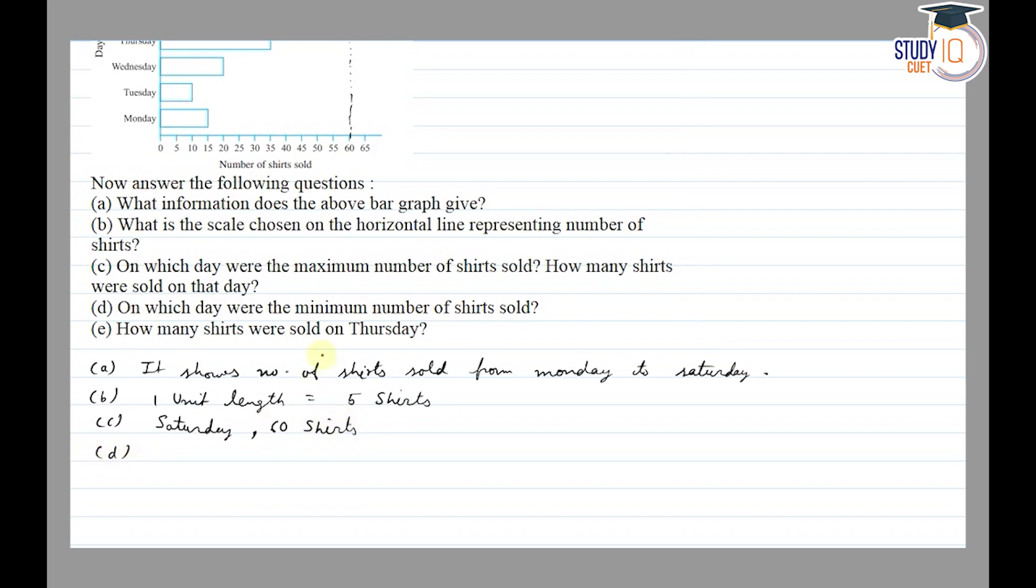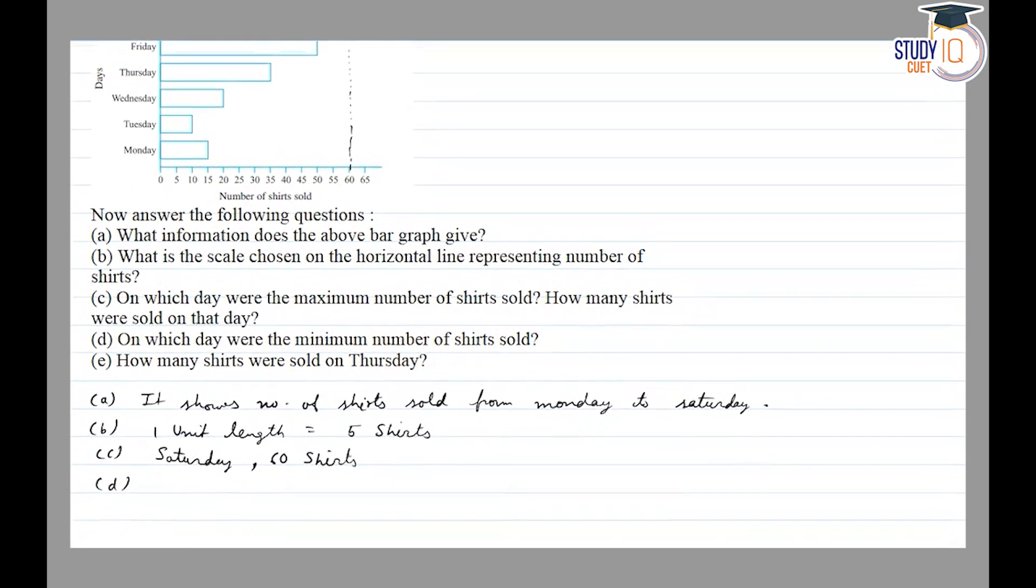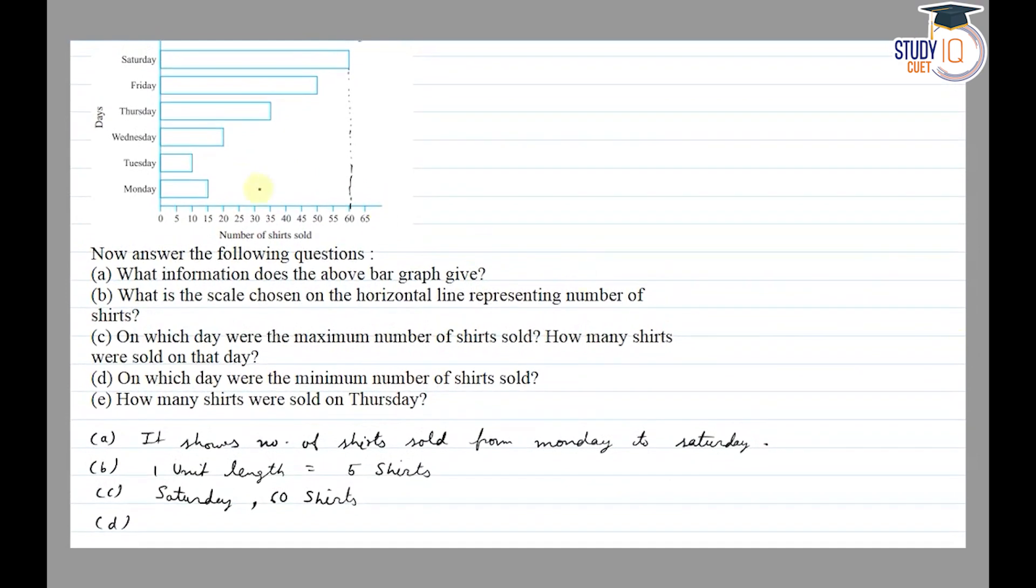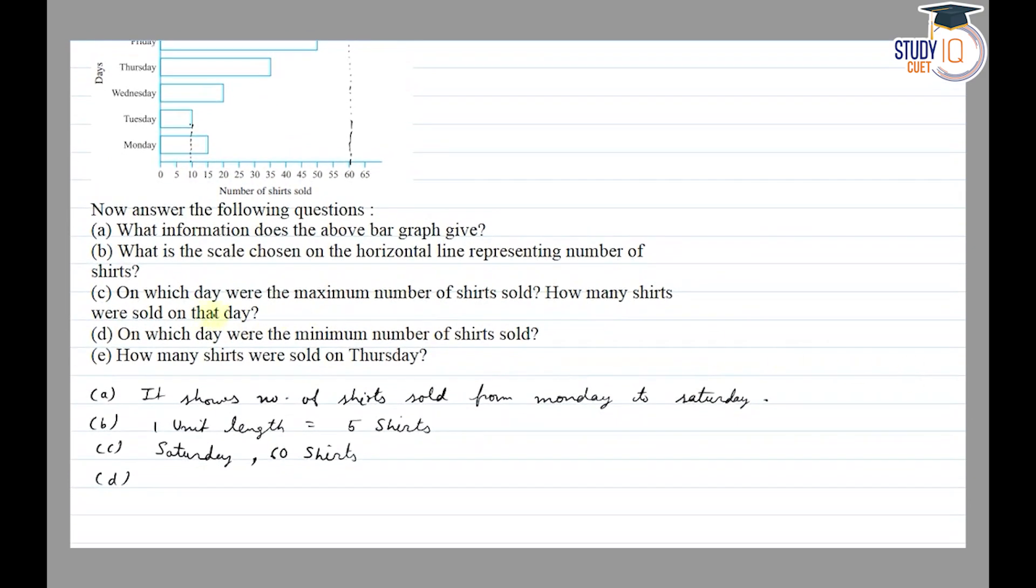Part (d): we will find out on which day were the minimum number of shirts sold. Let's look at the bar graph for the minimum number of shirts. We will match the line and find out it's Tuesday.